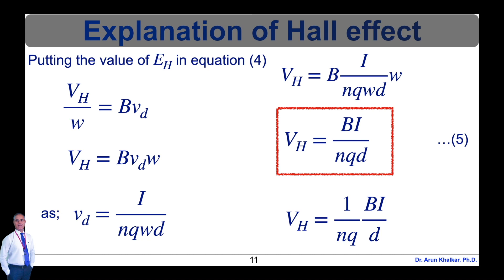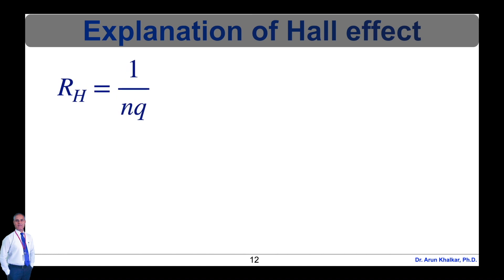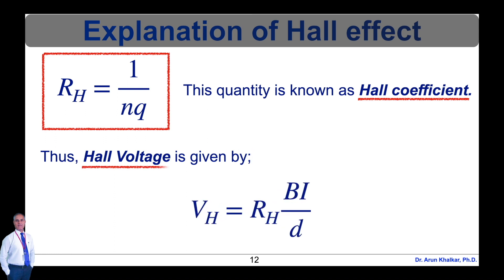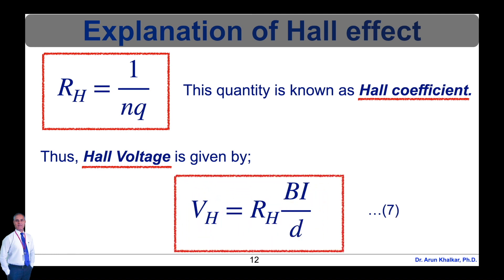Rearranging equation 5: V_H = (1 / n·q) × (B·I / d) — equation number 6. The quantity R_H = 1 / (n·q) is known as the Hall coefficient. Thus the Hall voltage is given by V_H = R_H × B·I / d — equation number 7. The magnitude and direction of Hall voltage depend on the magnitude and direction of current and magnetic field. Also, Hall voltage is inversely proportional to the thickness of the slab, as shown in equation 7.